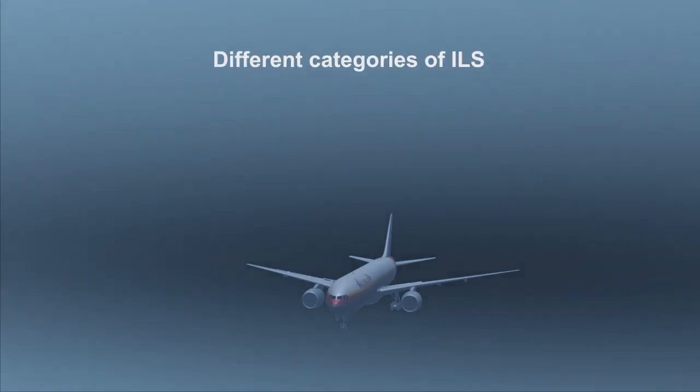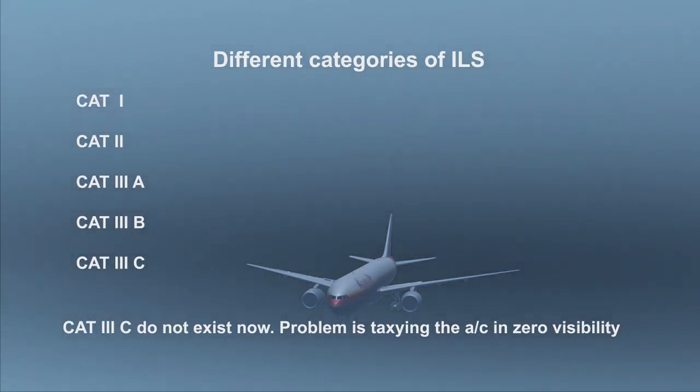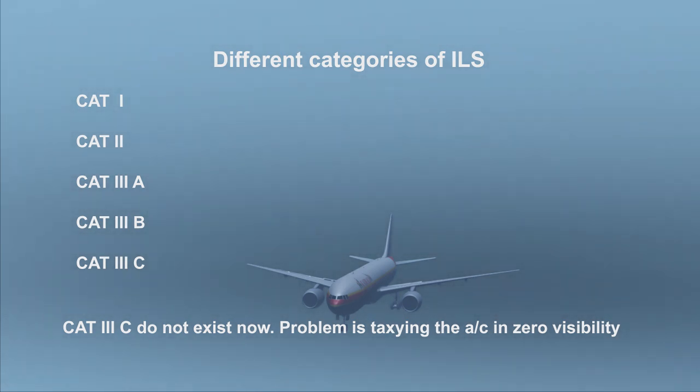There are different categories of ILS. They are category 1, category 2, category 3A, B, and C.